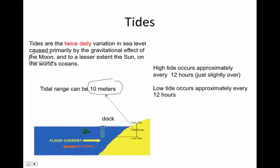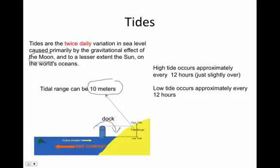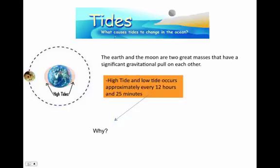Now here's our dock. If we build it a little too low from the shoreline then obviously, as I said before, it could get flooded over top and that's not a very good design for our dock. So what causes tides to change in the ocean? Well, as I said before, the Earth and the Moon are two great masses that have significant gravitational pull on each other.